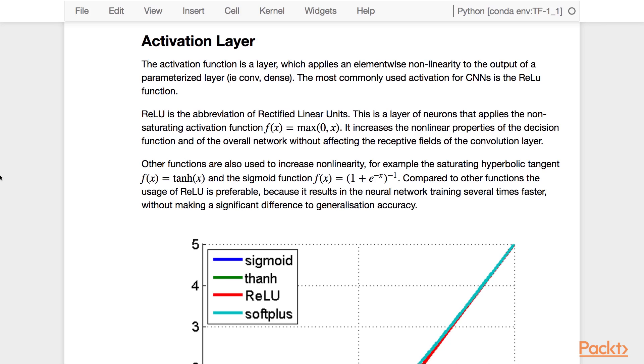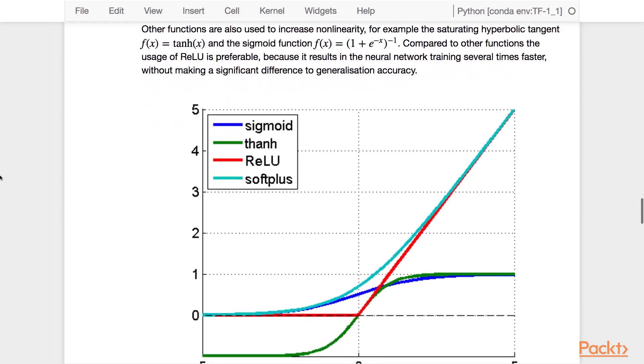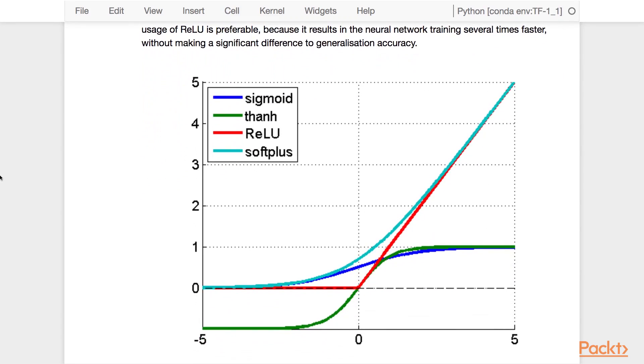Other functions are also used to increase non-linearity, for example, the tanh and the sigmoid function. Compared to the other functions, the usage of ReLU is preferable because it results in a neural network that trains much faster without making significant differences in generalization accuracy. It's important to note that an activation function doesn't have trainable weights and therefore makes the model more expressive without adding parameters to the model.